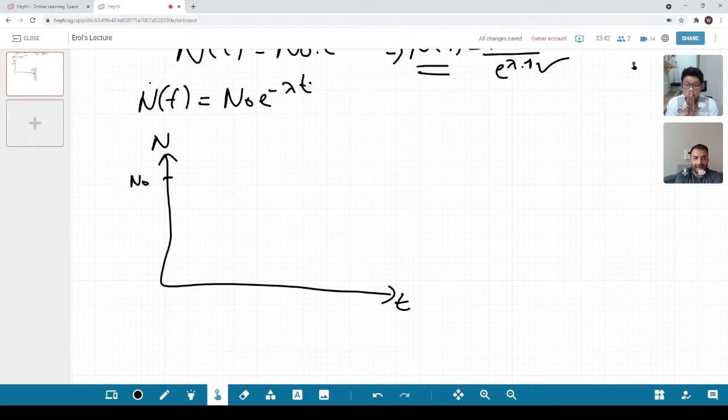The smart thing to do when you sketch a graph first, you have to put the initial value, which means time equals zero. When you put time equals zero, your number is going to be N₀. This is t equals zero.